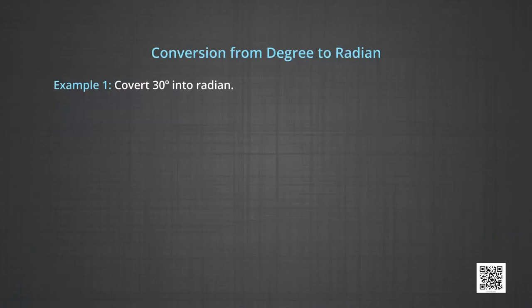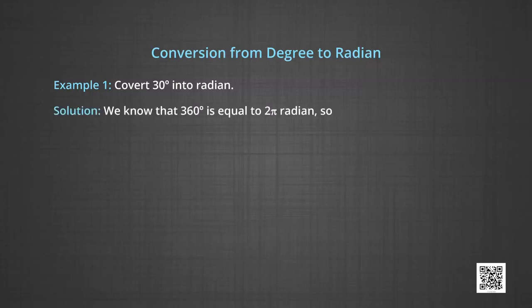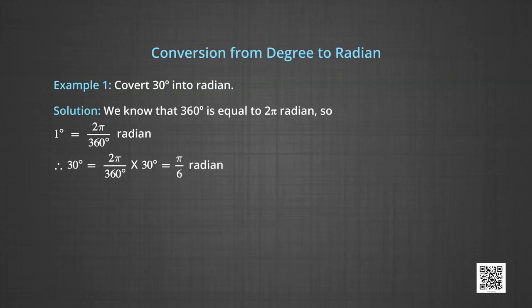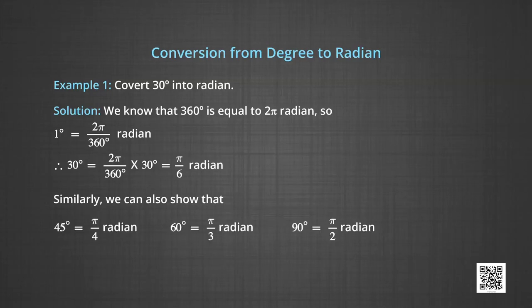We will now see conversion from degrees to radians. In example 1, we will convert 30 degrees into radians. We know that 360 degrees is equal to 2π radians, so 1 degree will be 2π/360 radians. Therefore, 30 degrees is equal to (2π/360) × 30, which on cancellation gives π/6 radians. Similarly, 45 degrees equals π/4 radians, 60 degrees equals π/3 radians, and 90 degrees equals π/2 radians.